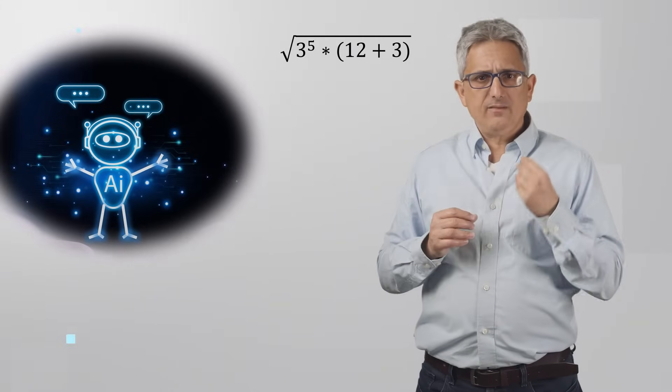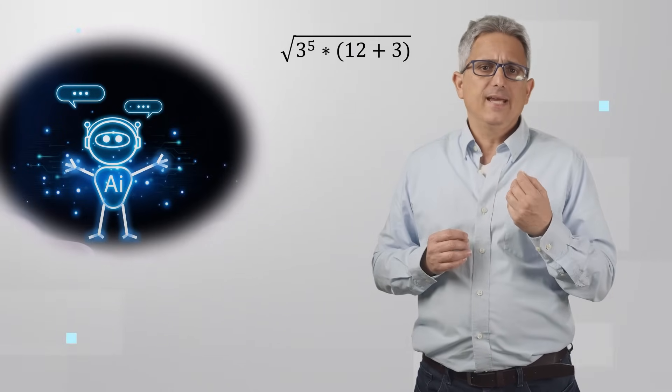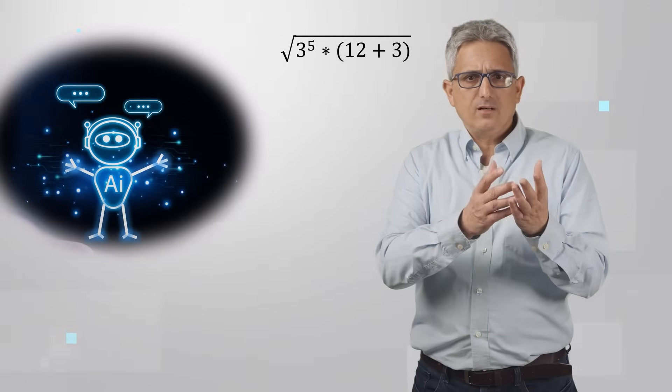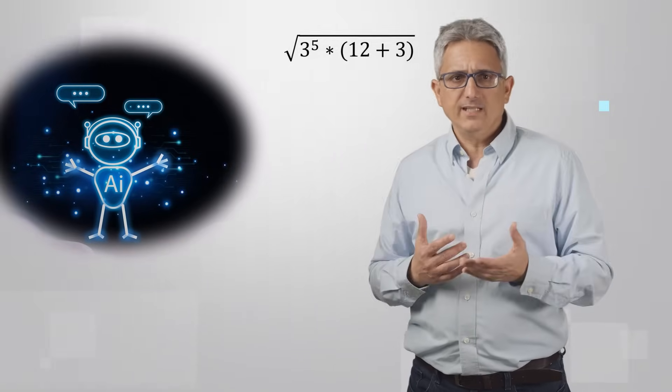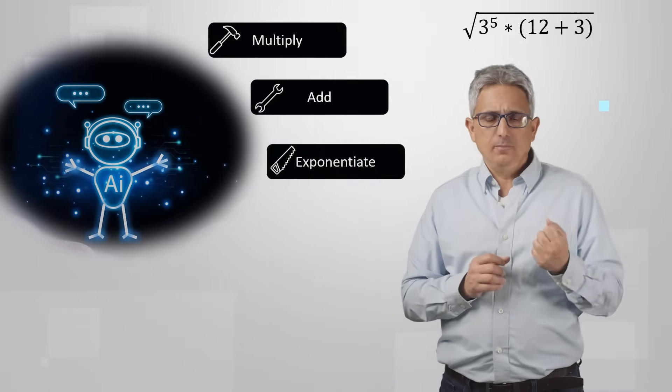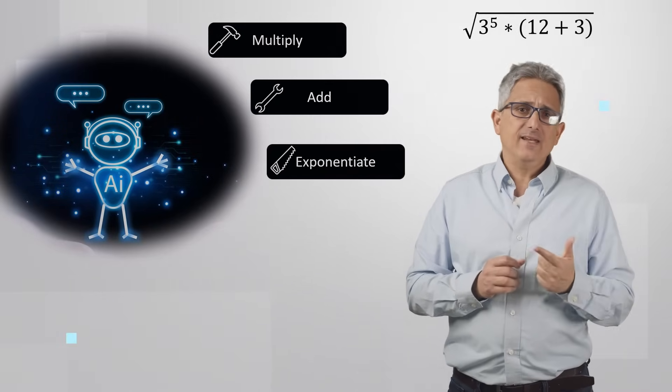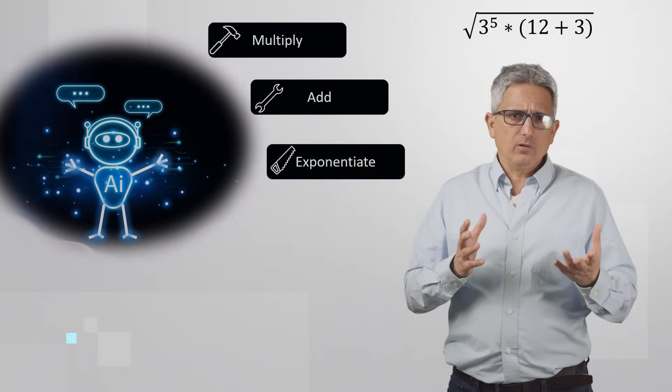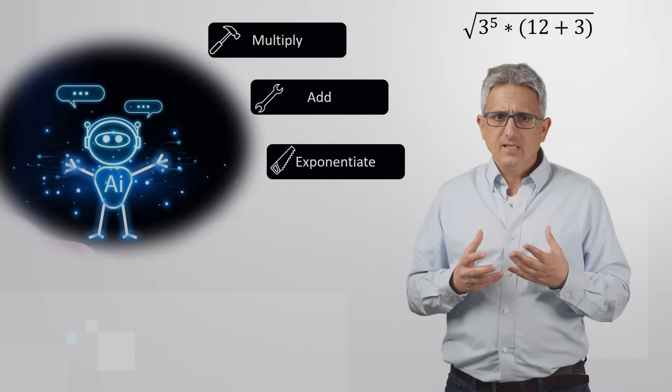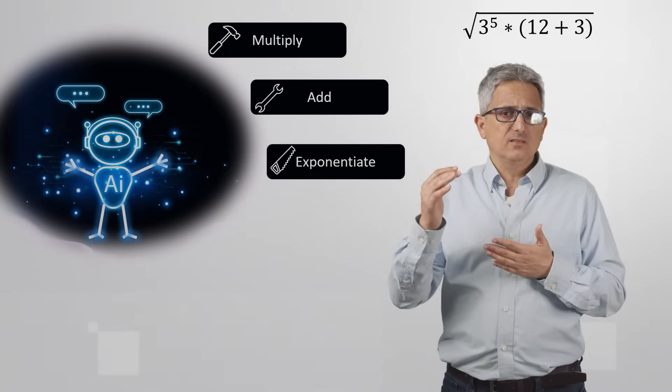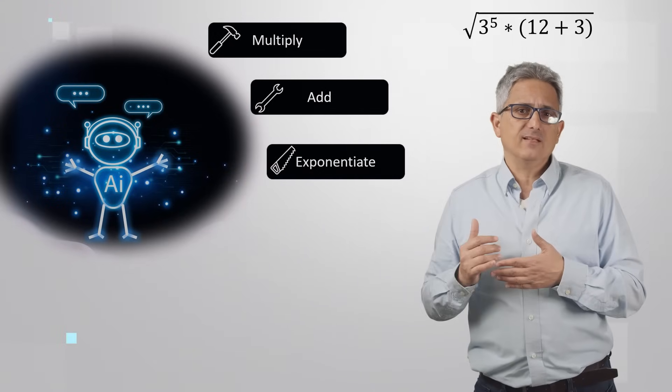First, we will provide the task to the LLM and tell it that these are the tools we can provide it. The tools, in our case, will be multiply, add, and exponentiate. The model will process the request and come up with a process or a flow to complete the full task.